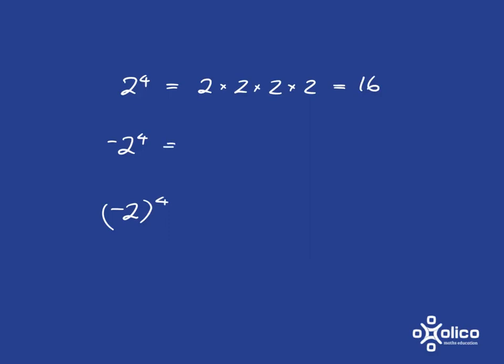Now if we go to this one, note that the negative is not affected by the four. What you've got is a negative in front of the number two to the power of four. We know two to the power of four is just 16, so we've got negative 16. If we write it out for completeness, we've got a negative, and then two to the power of four, which gives us negative 16.